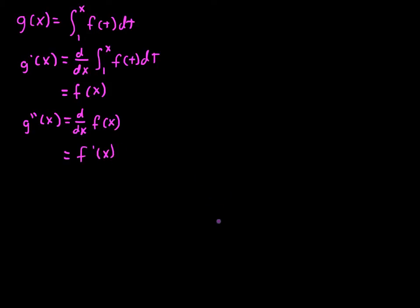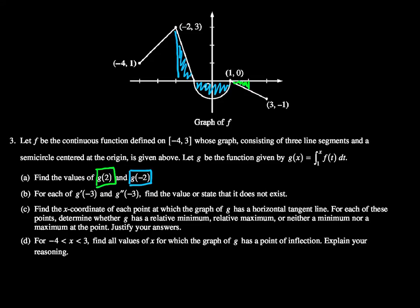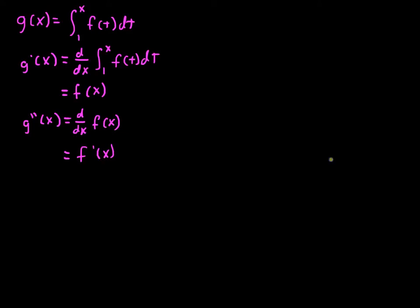Okay, now we need to start looking at how to find our derivatives evaluated at negative 3. I believe that's where we had, yes. g prime of negative 3 and g double prime of negative 3. So using this, g prime of negative 3 will simply equal f of negative 3.